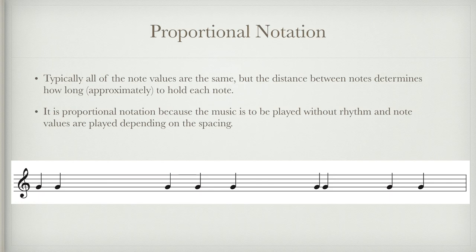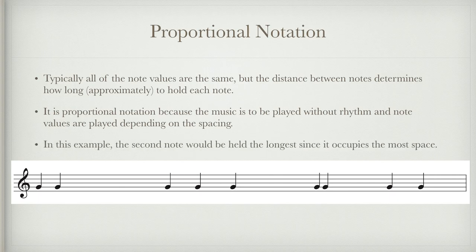In proportional notation, the music is played without strict rhythm — note values are determined by the spacing of individual notes. In this example, the second note would be held the longest since it occupies the most space.